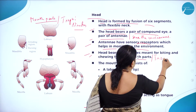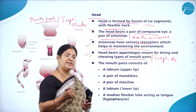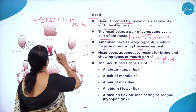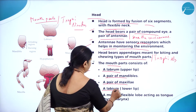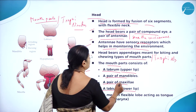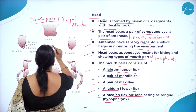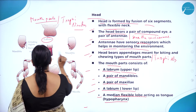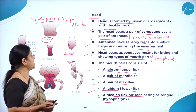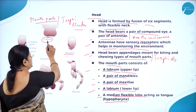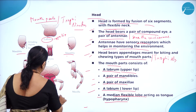The head bears appendages meant for biting and chewing — these are called trophic structures. The mouth parts of cockroach include: a labrum (upper lip), a pair of mandibles for biting and chewing like teeth, a pair of maxillae to hold food items, a labium (lower lip), and a median flexible lobe acting as a tongue called the hypopharynx.